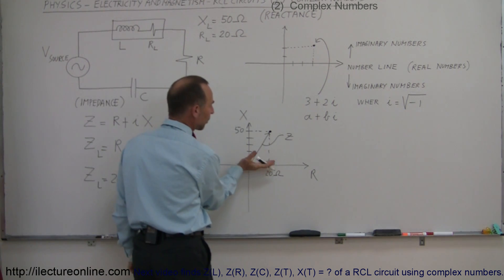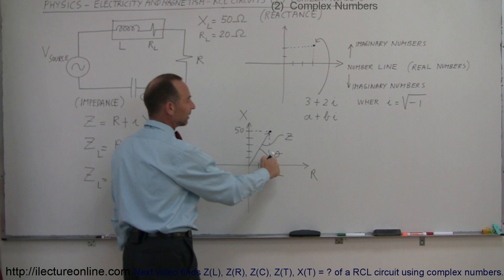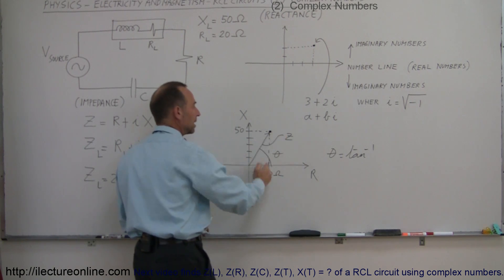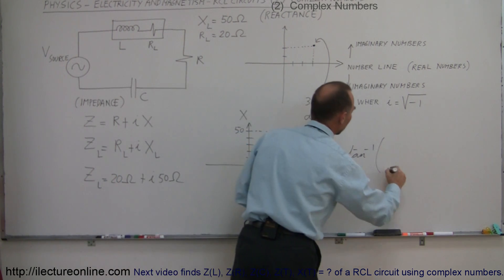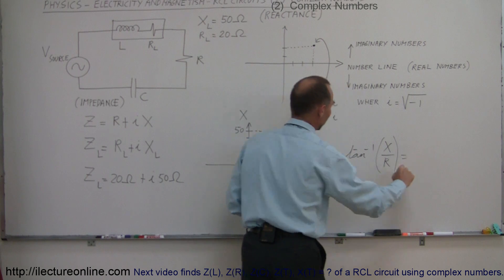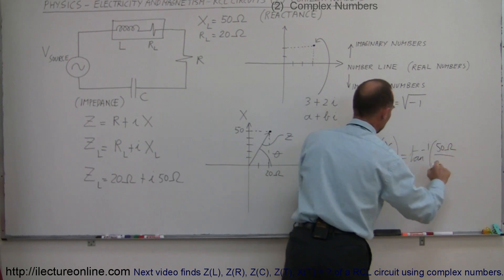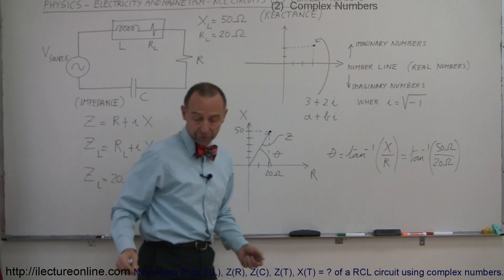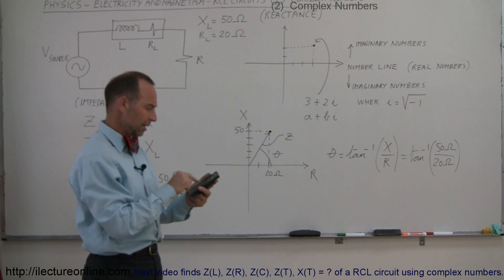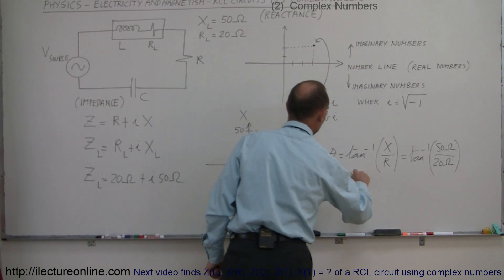Notice that the impedance has what we call a phase angle, theta. If you want to find that phase angle, theta equals the arc tangent of the opposite side — which is the imaginary part, X — divided by the horizontal side, which is the real part, R. So in this case, the phase angle is the arc tangent of the reactance, 50 ohms, divided by the resistance, 20 ohms — the arc tangent of 50 over 20 — which equals 68.2 degrees.